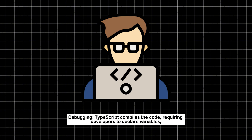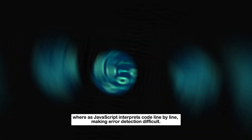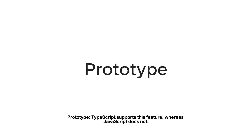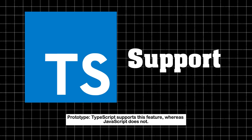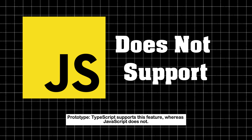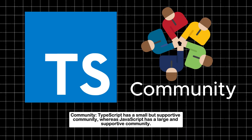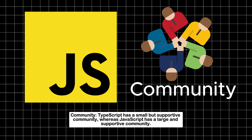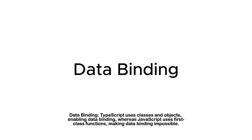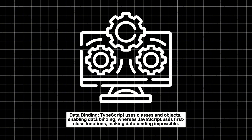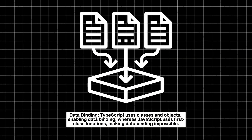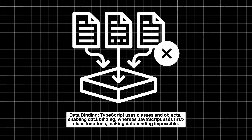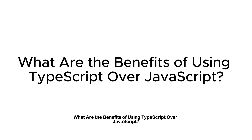Debugging: TypeScript compiles the code, requiring developers to declare variables, whereas JavaScript interprets code line by line, making error detection difficult. Prototype: TypeScript supports this feature, whereas JavaScript does not. Community: TypeScript has a small but supportive community, whereas JavaScript has a large and supportive community. Data binding: TypeScript uses classes and objects enabling data binding, whereas JavaScript uses first-class functions, making data binding impossible.